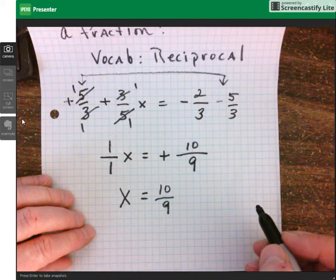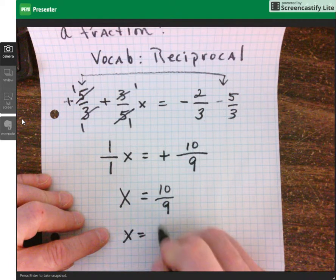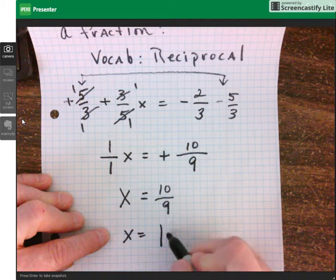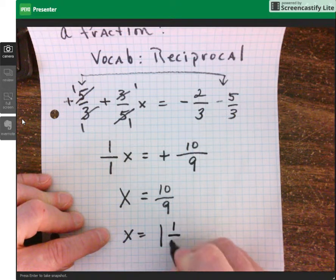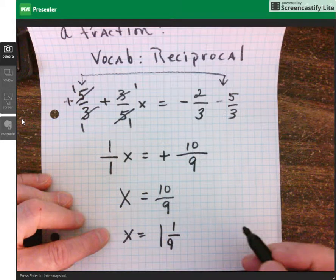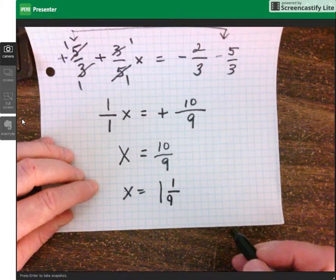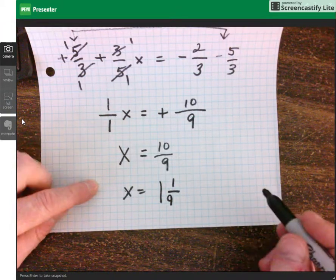If you would prefer, you may turn this into a mixed number. And we would divide 10 by 9. 9 goes into 10 one time with a remainder of 1 over 9. Our answer therefore is x equals 10 over 9, or x equals 1 and 1 ninth. Thank you very much for watching.